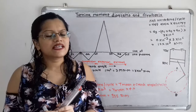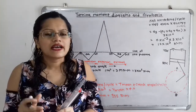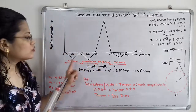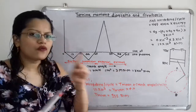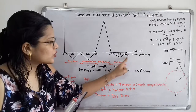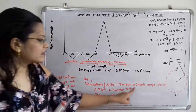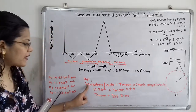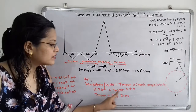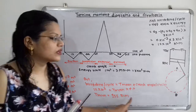Net work done per cycle equals mean torque multiplied by crank angle per cycle. In a four stroke engine, one cycle covers a total crank angle of 4pi radians. Using net work done = 12 × 10³ N·m and crank angle = 4pi, we calculate the mean torque, which equals 955 N·m.